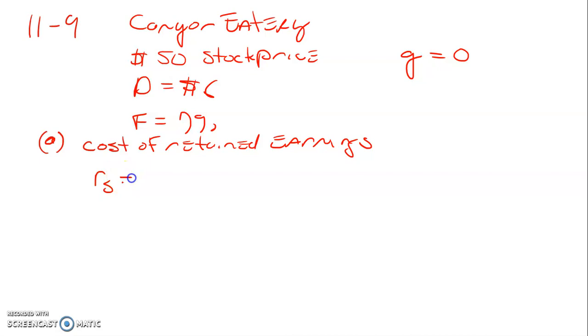So normally this would be D1 divided by P0 plus the growth rate.